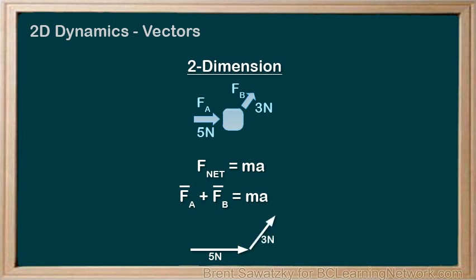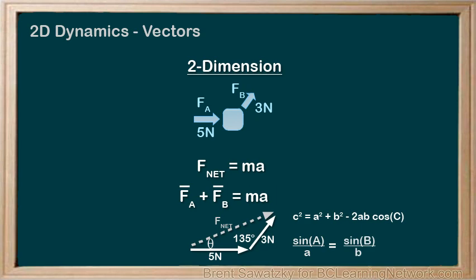The resultant vector, or Fnet, would be from the start of the vector addition to the end, as usual. Taking a look at our vector diagram, we can determine that our angle here is 90 degrees plus another 45 degrees, or a total of 135 degrees. We can see that this is definitely not a right triangle, so we can't use our standard trig ratios. In a case like this, where our vector diagram doesn't form a right triangle, we need to pull out some new tools. Cosine law and sine law would work well here — the cosine law can be used to determine the magnitude of Fnet, and the sine law can be used to determine the direction of Fnet.